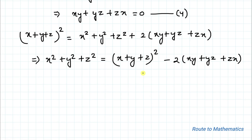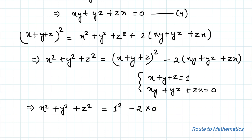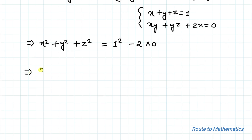From equation 1 and equation 4 we have x + y + z = 1 and xy + yz + zx = 0. Putting these values in, we get x² + y² + z² = 1² − 2 × 0, which equals 1.